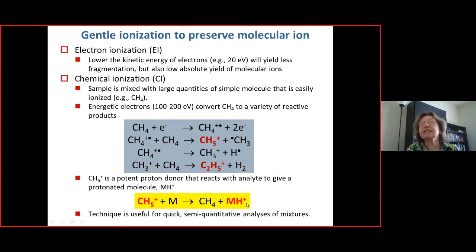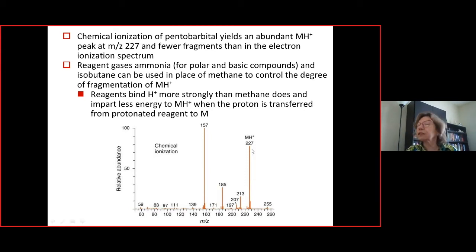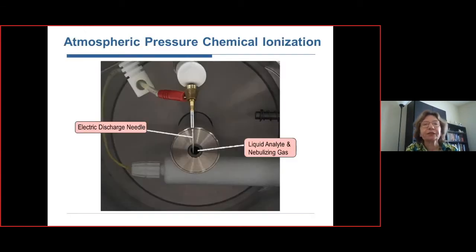Ionizing by adding a proton is a very useful approach. For pentobarbital, instead of the M⁺• at 226, we see a large peak at 227 — the protonated molecule [M+H]⁺. Some fragmentation remains. Other reagent gases can also be used for chemical ionization and may reduce fragmentation further.